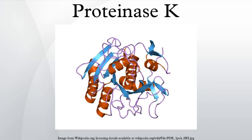Proteinase-K has two binding sites for Ca²⁺, which are located close to the active center, but are not directly involved in the catalytic mechanism. The residual activity is sufficient to digest proteins which usually contaminate nucleic acid preparations. Therefore, the digestion with Proteinase-K for the purification of nucleic acids is usually performed in the presence of EDTA.